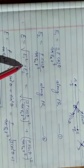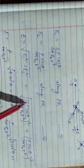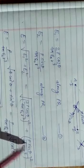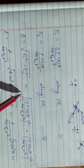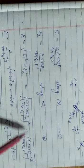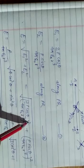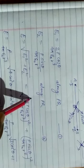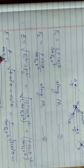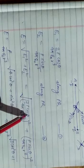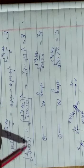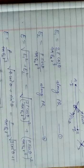तो इनका total net electric field होगा E = √(E1² + E2²)। हम यहाँ E1 की value रख दें: 2P cosθ / (4πε₀ R³), whole square, और E2 की value: P sinθ / (4πε₀ R³), whole square। Under root लगाने के बाद P / (4πε₀ R³) दोनों में common है, उसे बाहर लेते हैं। बचा: 4cos²θ + sin²θ।